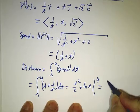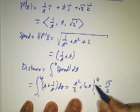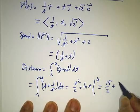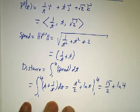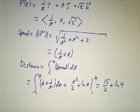The t squared over 2 bit gives us 15 halves. The natural log of t gives us the natural log of 4, which is also 2 natural log of 2. And we're done.